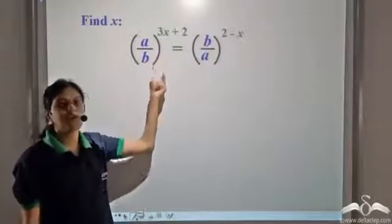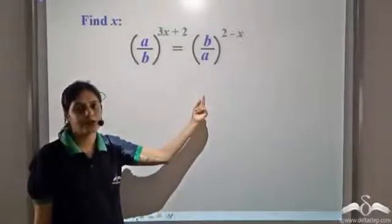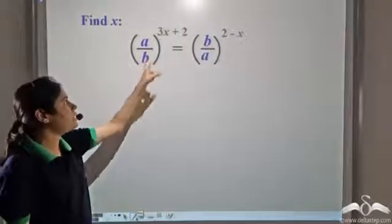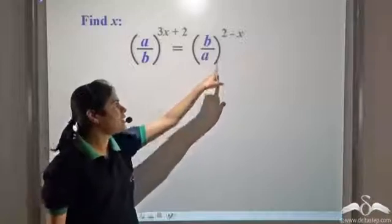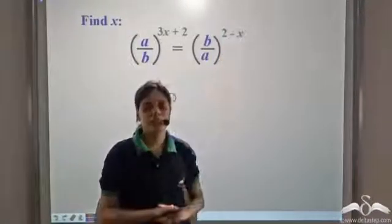We need to find the value of x by solving this equation. We have a by b raised to the power 3x plus 2 and b by a raised to the power 2 minus x.